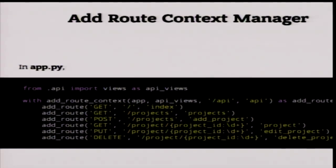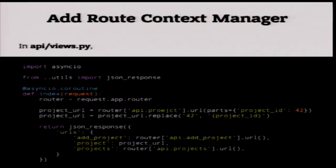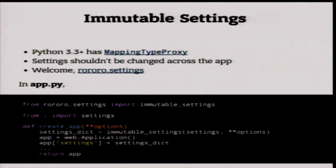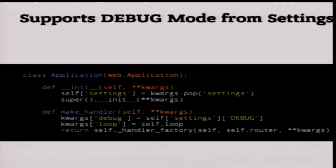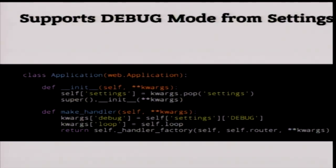There are several additional functions I use in my project — like simplifying adding routes to the application, using immutable settings with MappingProxyType from Python 3.3, and a debug mode. Right now aiohttp web is very raw — it's only at the beginning, and many features are not yet introduced or developed. But I think in the next several months the ecosystem around aiohttp web will grow larger, and we'll be able to use it like Flask or Django without any pain.